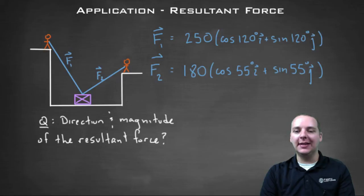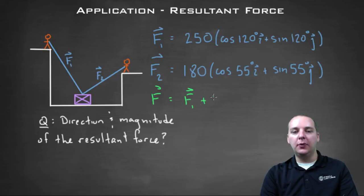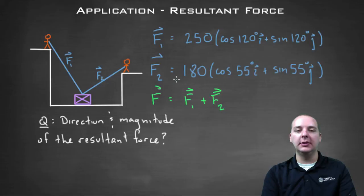So to get this answer that they're looking for, to find the direction and magnitude of the resultant force that they're asking about, all we're going to do really is take force one and add it to force two. And as we well know, to do that you're basically just adding the I components and adding the J components together.